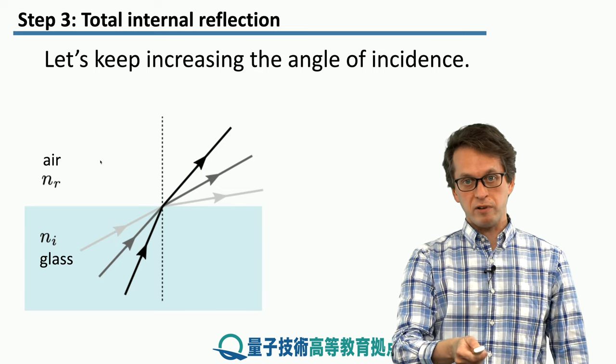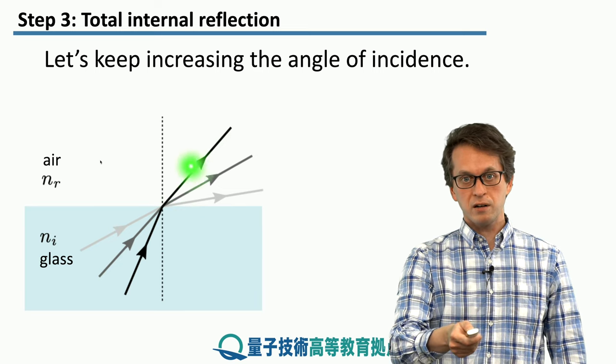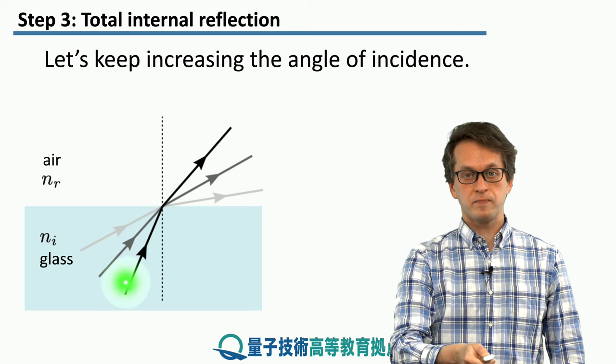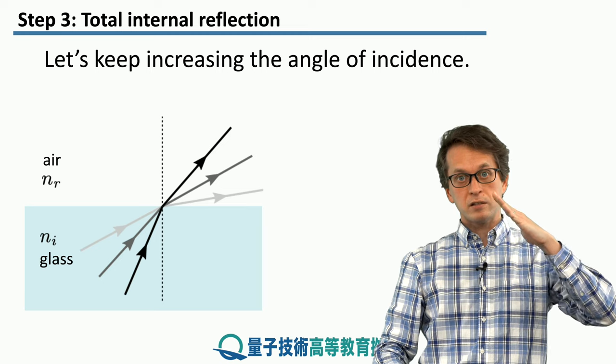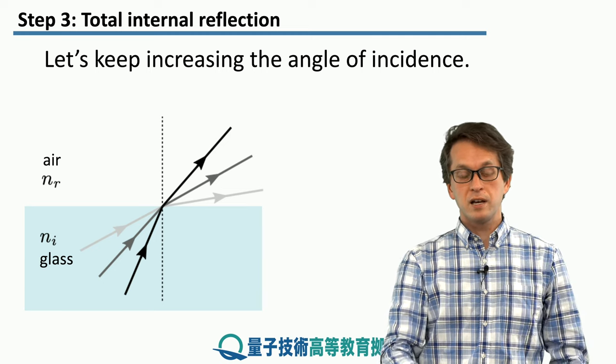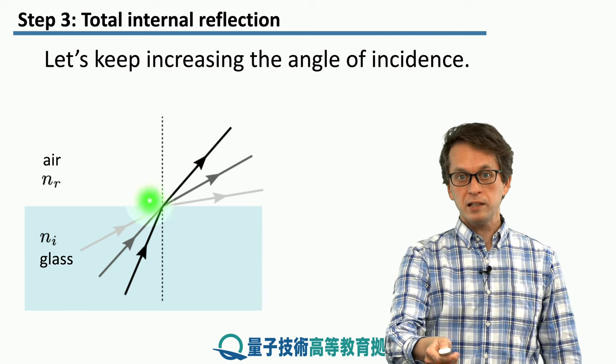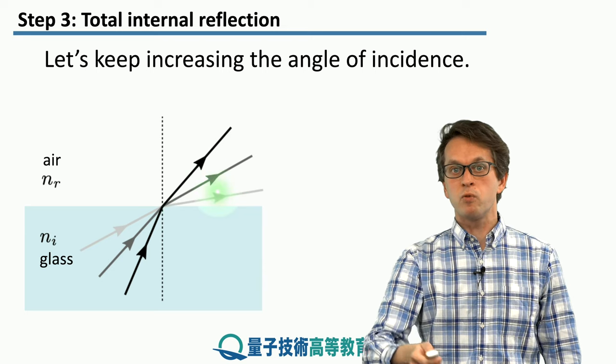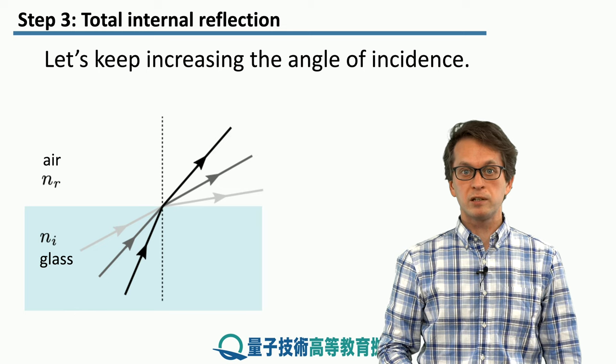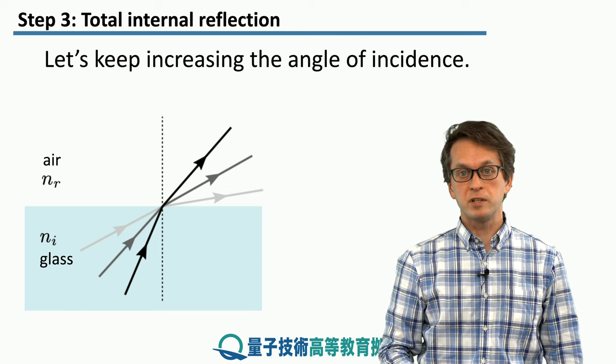The angle of refraction, so this angle over here, is larger than the angle of incidence. So we can have the scenario where we are increasing steadily the angle of incidence, and the refracted beam of light is being bent further and further away from the normal axis that's perpendicular to the surface of the material.